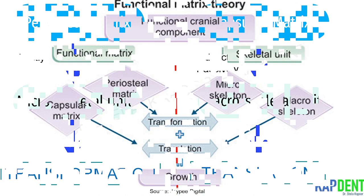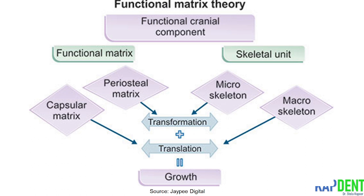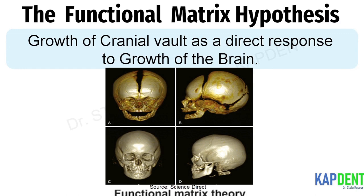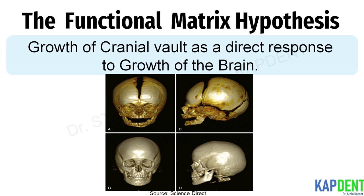This flowchart provides a concise explanation of all the processes that take place according to this hypothesis. The clearest example of the functional matrix in operation is the growth of the cranial vault as a direct response to the growth of the brain. Pressure exerted by the growing brain separates the cranial bones at the sutures, and new bone passively fills in at these sites so that the brain case fits the brain.